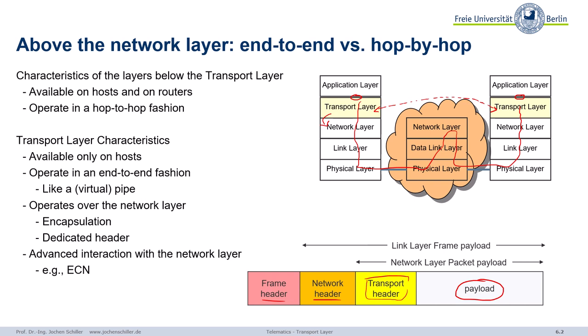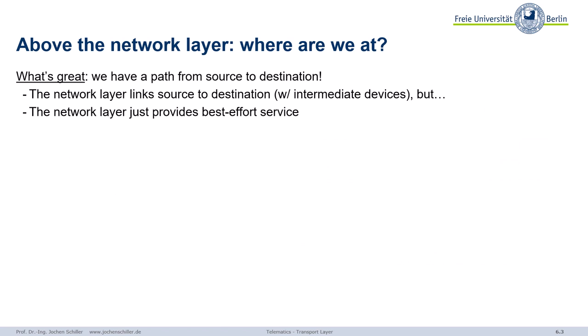For example, layer 3 can inform layer 4 about congestion — too much data in the network. We are now above the network layer and have a path from source to destination. We don't care about intermediate devices. The network layer is best effort, but on the transport layer we can do much more. However, transporting data end-to-end also brings back problems from the link layer.